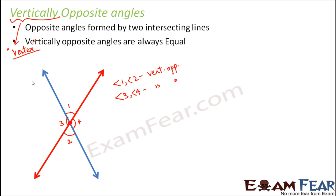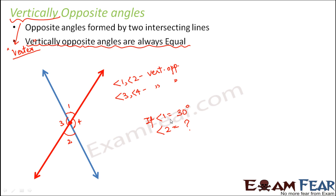One interesting fact is that vertically opposite angles are always equal in their values. That means if angle 1 is equal to 30 degrees, angle 2 would also be equal to 30 degrees. No matter what the condition is, vertically opposite angles will always be equal to each other.